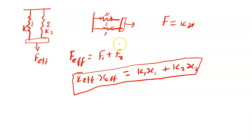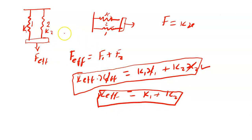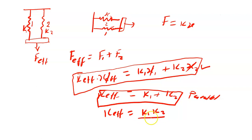This is the standard formula for the parallel connection, but a rough assumption can be made that these two springs will have the same extension. If you encounter a question, you can use this formula under parallel connection. If the question assumes they have the same extension, then the effective spring constant is just equal to k1 plus k2 directly. This is for the parallel connection with the assumption of the same extension.